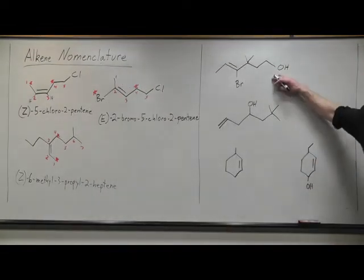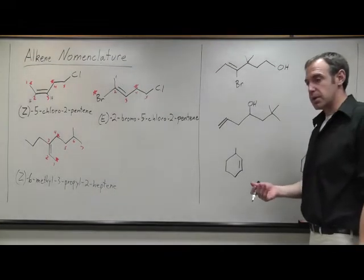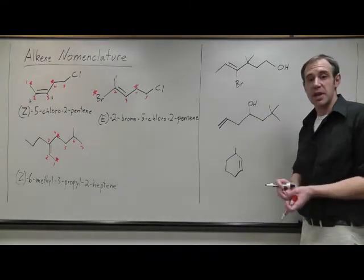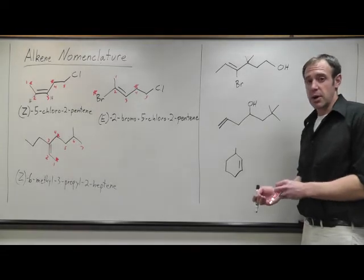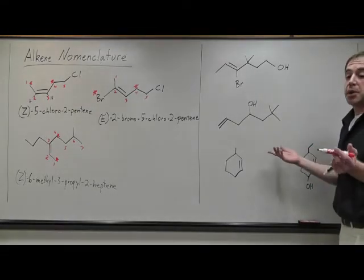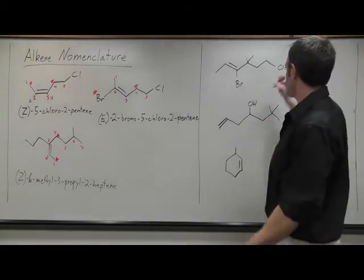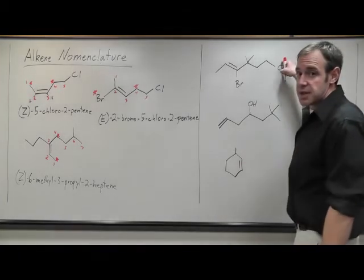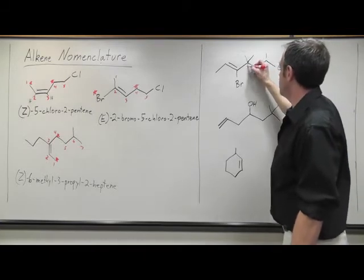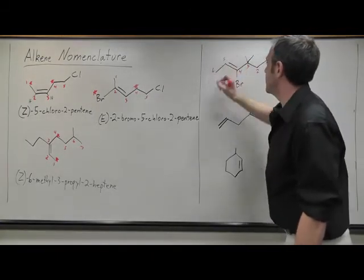Once we throw alcohols into the mix, now alcohols are the highest prioritized group. So instead of numbering the longest carbon chain including an alkene, we focus on the alcohol. And so the longest carbon chain in these examples will include both, but we're going to number such as to give the alcohol the lowest number. So this will be carbon one, two, three, four, five, and six.